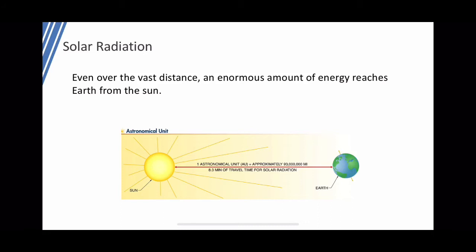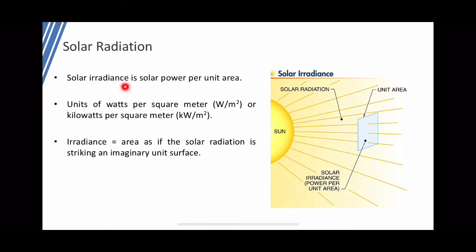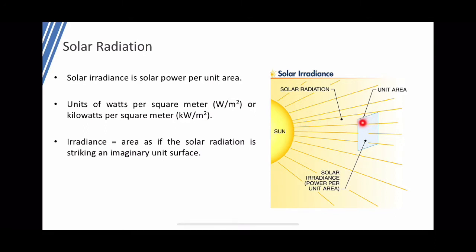The sun's energy mainly comes as heat. Solar irradiance is solar power per unit area — the sunlight strength over a unit area — with units of watts per square meter or kilowatts per square meter. Irradiance is defined as the area of solar radiation striking an imaginary surface. Because of the sun's enormous size relative to the planets, we assume sunlight arrives in a straight line.